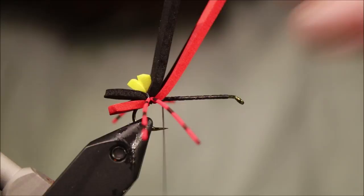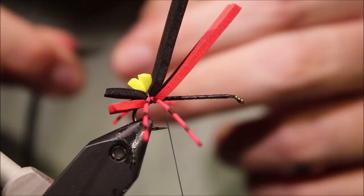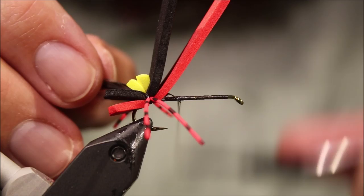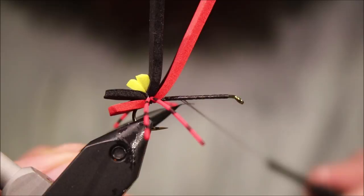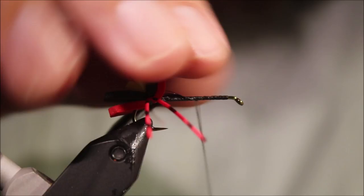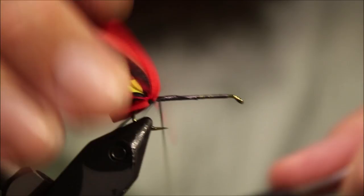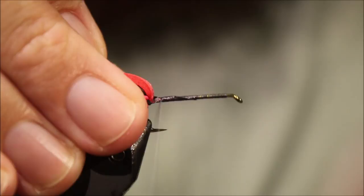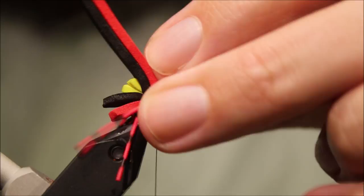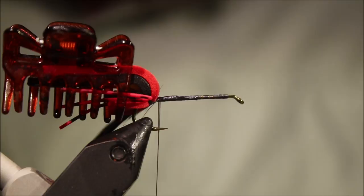Then I'll take my hackle. I've got a black saddle hackle here. It's a Whiting Hebert Miner, but any saddle feather will do, your preferred dry fly saddle. I'll come in and tie that in, all the way back. Then I'll just take my wee hair clip and gather up all the materials.